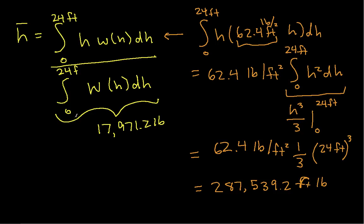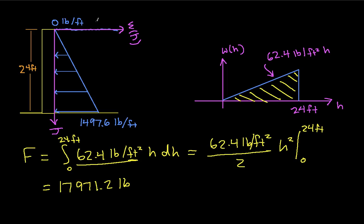So I know this top integral now. I know the bottom integral. So I can say that h bar is equal to this guy divided by this guy. When I actually perform that calculation, I get that h bar is exactly 16 feet. And so if I go back to my picture, that says that at 16 feet, which I guess is about here, 16 feet from the top or 8 feet from the bottom is where the equivalent force would be applied.